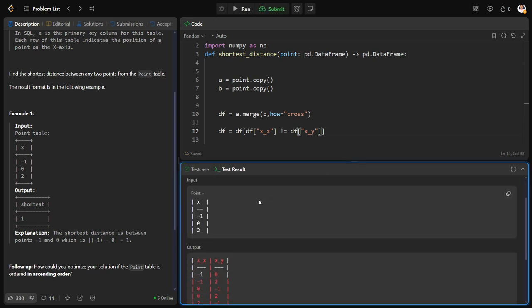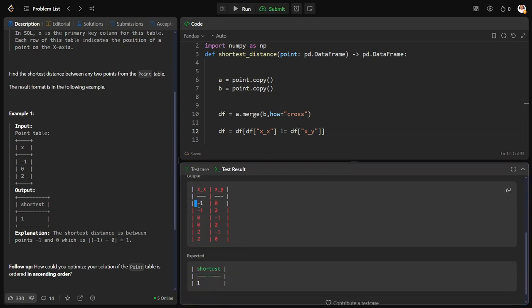Now what I need to do? I need to filter down this row such that x_x is not equal to x_y. So I will keep df = df where df of x_x not equal to df of x_y, because I want only the not equal rows. Let me show you. Now can you see? The nine rows became six rows. Minus one minus one gone, zero zero gone, two two gone.